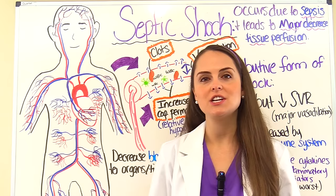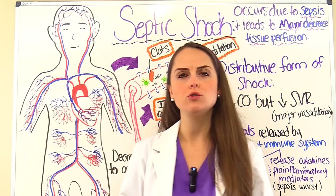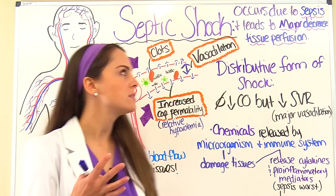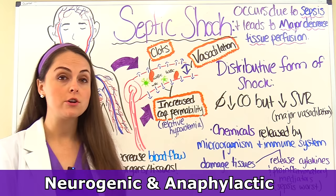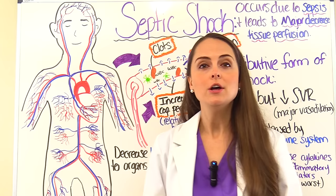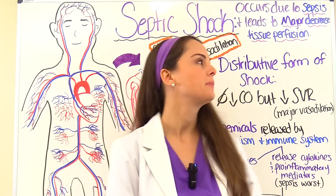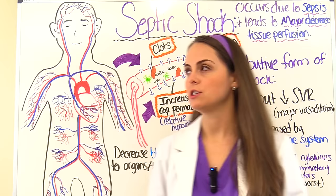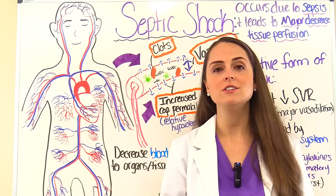Now let's talk about the pathophysiology of septic shock — what is leading these small vessels to not deliver oxygen to those cells. Septic shock is a distributive form of shock; the other distributive types are neurogenic and anaphylactic. This means there are issues with these small vessels being able to distribute blood flow. It is not occurring due to a cardiac output issue — in the early stages of septic shock you actually have a normal or high cardiac output.